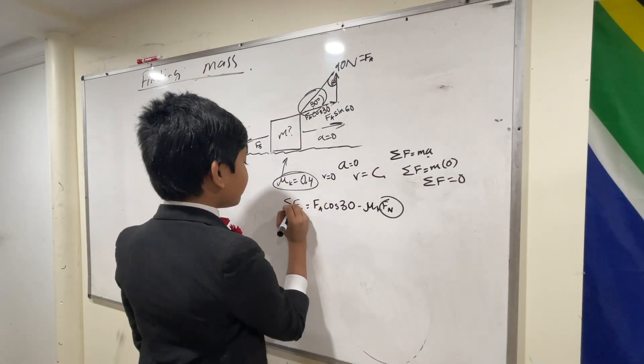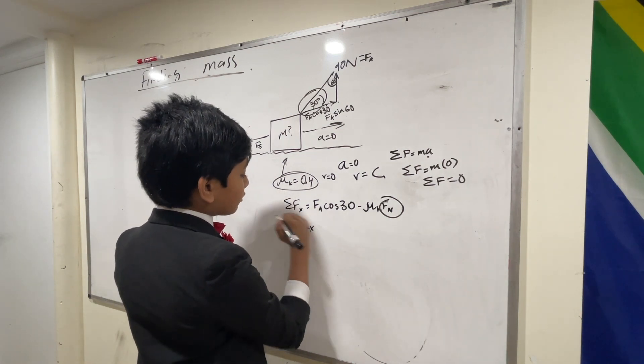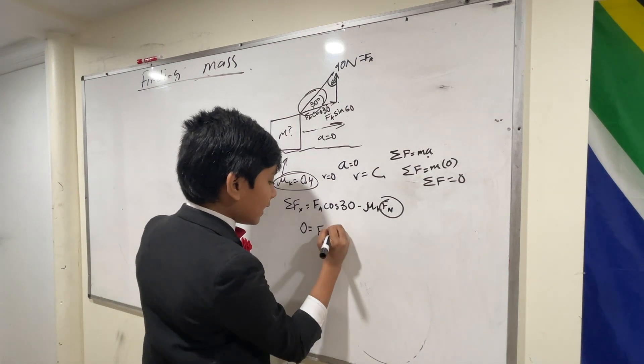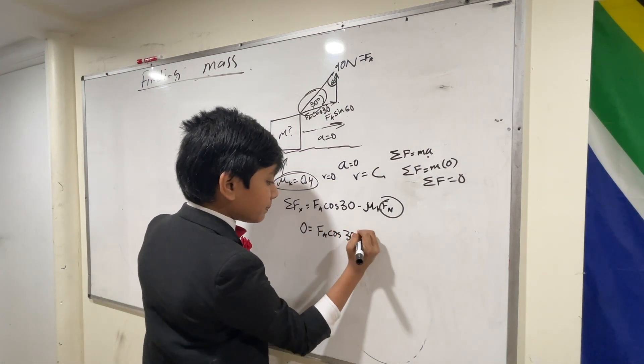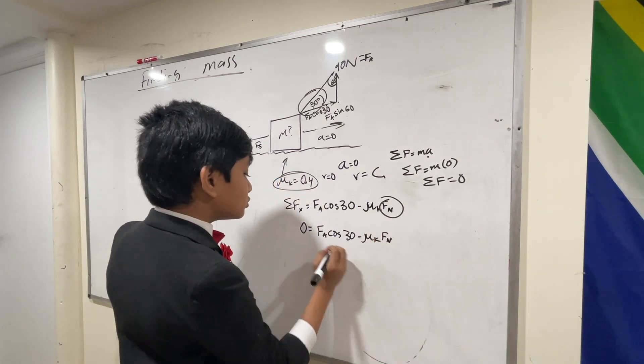So now, fx is actually equal to zero, because there is no acceleration. So we're going to put zero on this side. And now, hopefully you see how by adding mu k fn to both sides, we get f a cosine 30 is equal to mu k fn.